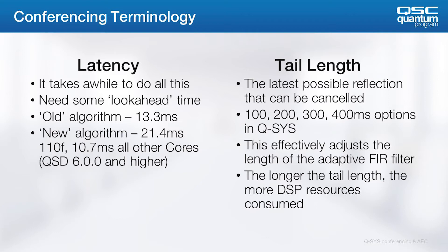For example, the Core 110F can support 16 200-millisecond algorithms, while the number decreases to 8 for 400-millisecond tail lengths.